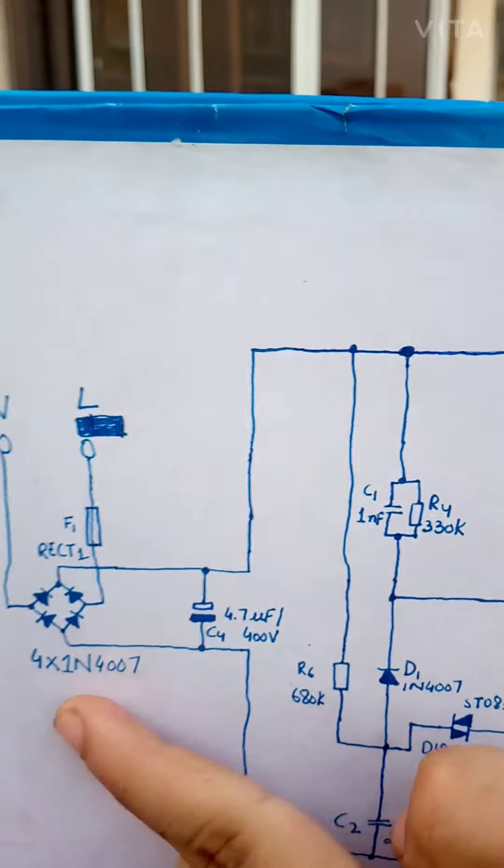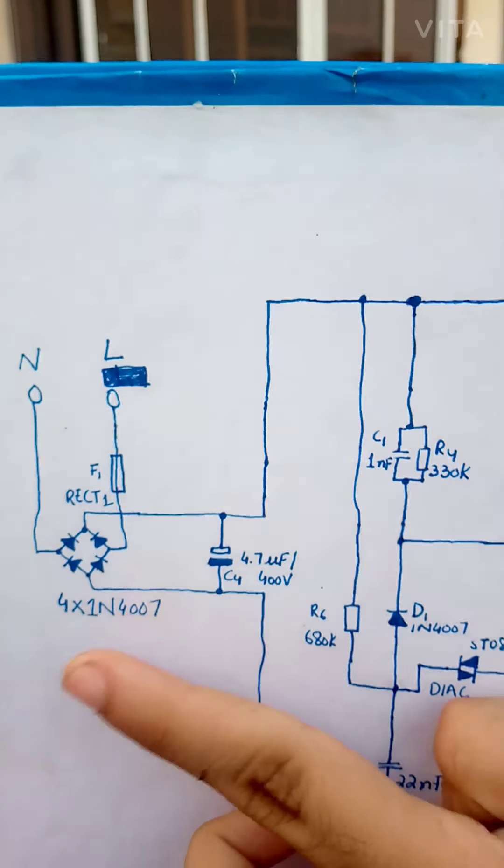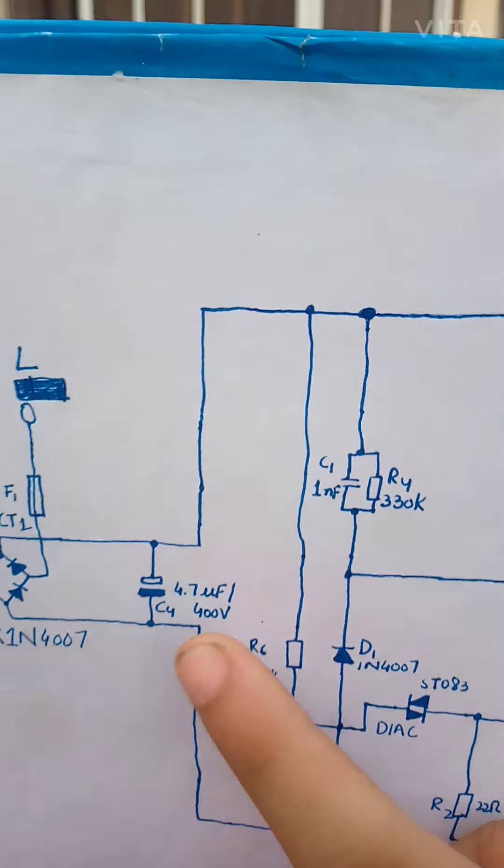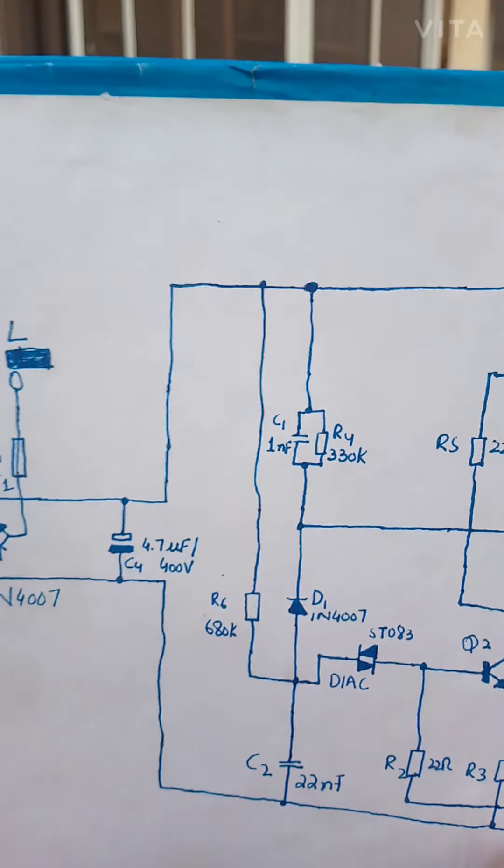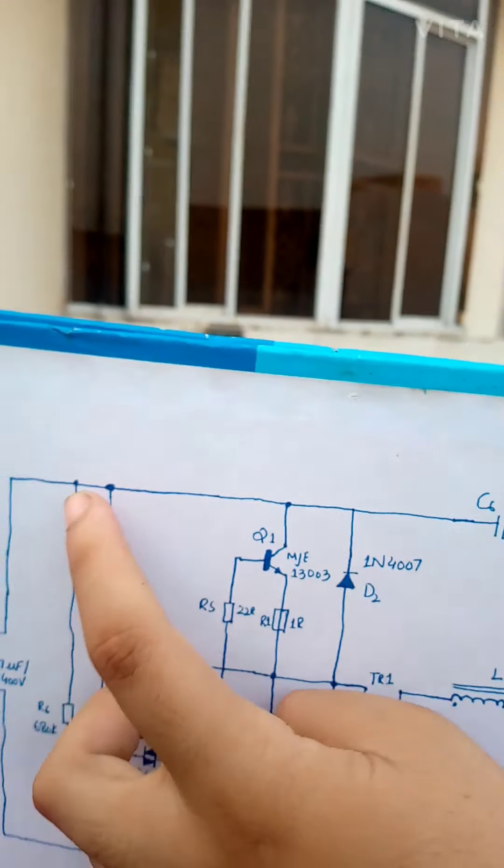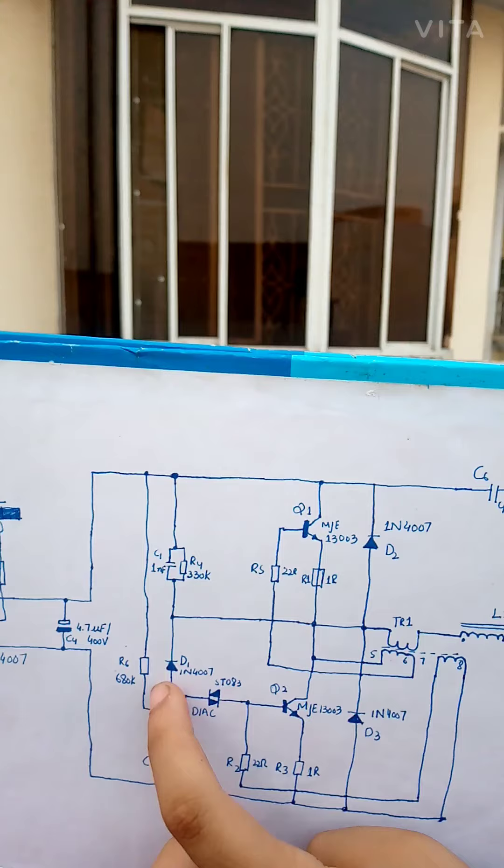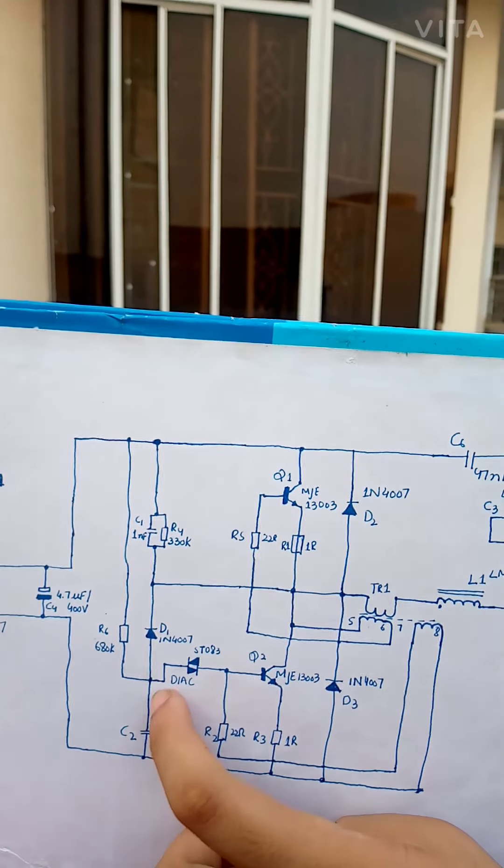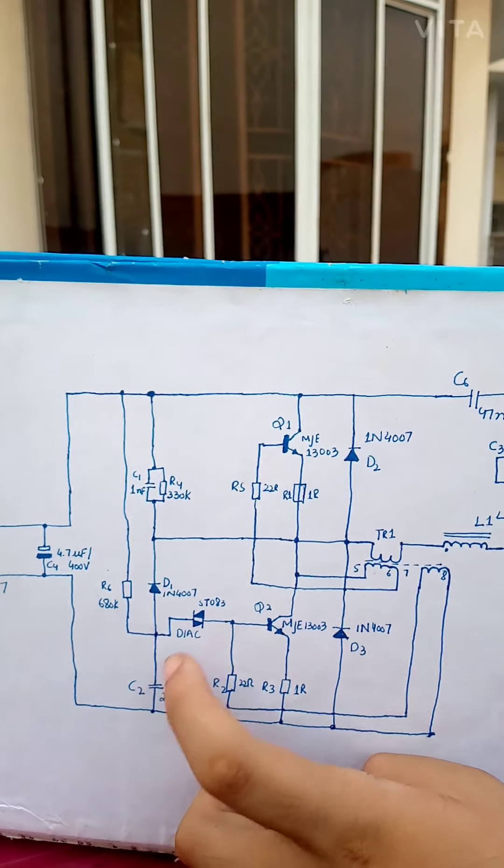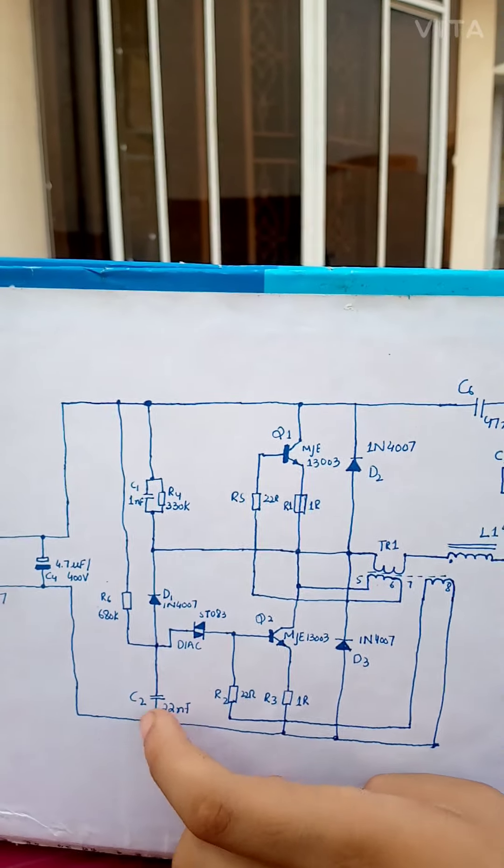When voltage goes in, there's a fuse for protection. AC is converted to DC by the rectifier and this then smooths for stable voltage. Stable voltage goes there. When this capacitor charges, it monitors the voltage of this capacitor.